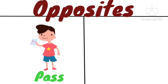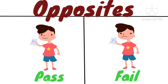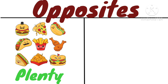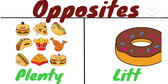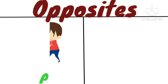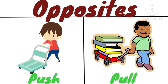Opposite of pass is fail. The boy passed the examination, and the boy failed. Opposite of push is pull. The boy is pushing the trolley, and the boy is pulling the trolley.